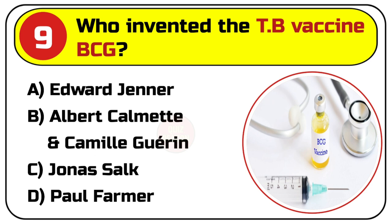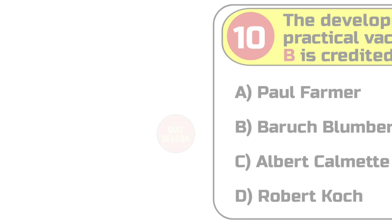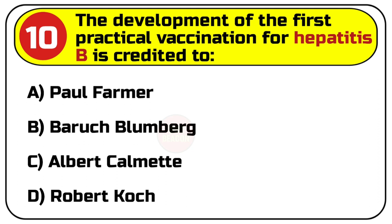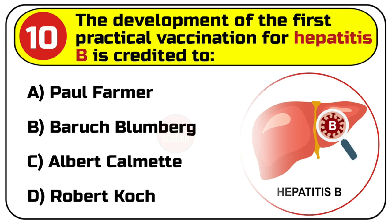Correct answer is B. Albert Calmette and Camille Guérin. Question number 10. The development of the first practical vaccination for hepatitis B is credited to: A. Paul Farmer, B. Baruch Blumberg, C. Albert Calmette, D. Robert Koch.